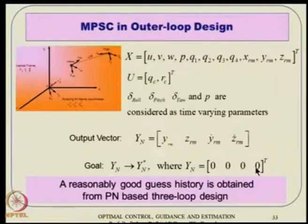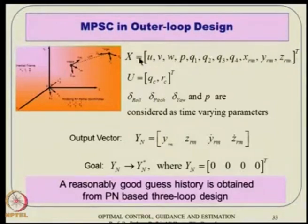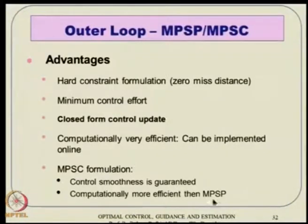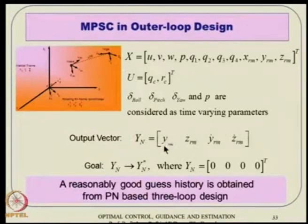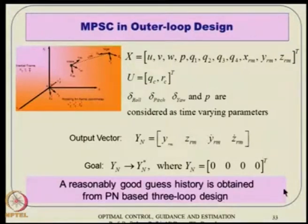For the outer loop design, the states considered include u, v, w, and quaternion components, with p treated as a time-varying parameter and q, r as control variables. The output vector has relative dynamics in the inertially-located fin frame in y and z directions that must go to zero, and relative velocity in y and z directions must also go to zero — that is the formulation. These techniques also require a guess history, so we implement a PN-based three-loop design and take the guess history from there.